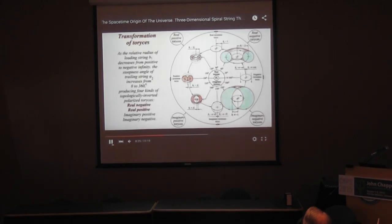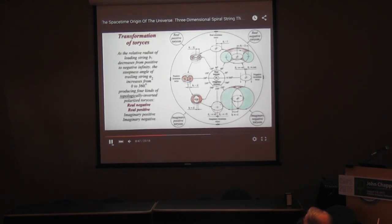Transformation of Tauruses. As the relative radius of the leading string B1 decreases from positive to negative infinity, the stiffness angle of the trailing string B2 increases from zero to 360 degrees, producing four kinds of topologically inverted polarized Tauruses: real negative, real positive, imaginary positive, and imaginary negative.